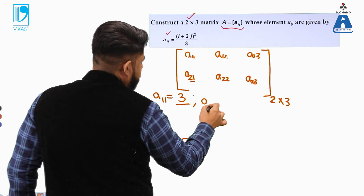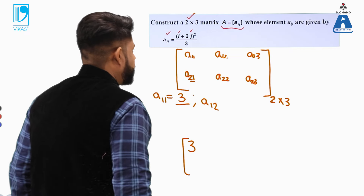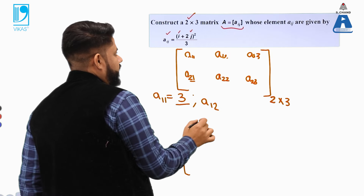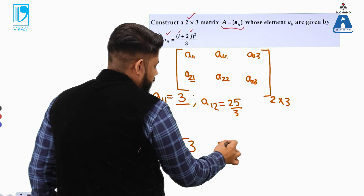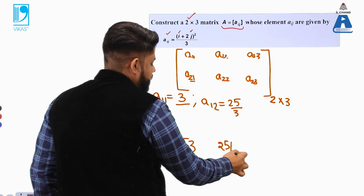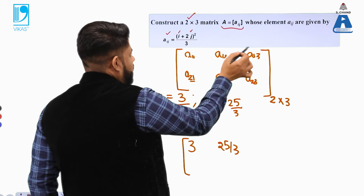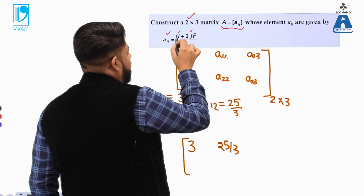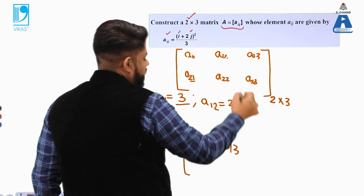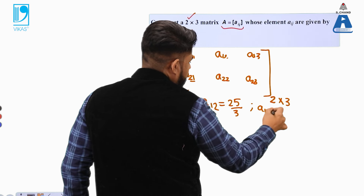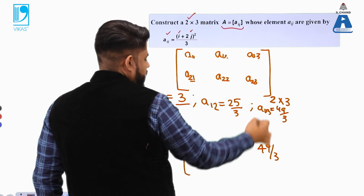For a12, substitute i=1 and j=2: (2×2 + 1)² / 3 = (4+1)² / 3 = 25/3. So a12 = 25/3. For a13, substitute i=1 and j=3: (1 + 2×3)² / 3 = (1+6)² / 3 = 49/3. So a13 = 49/3. Put these values in the corresponding positions of the matrix.